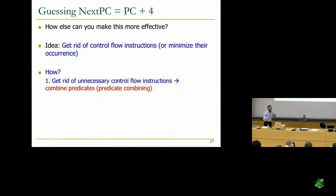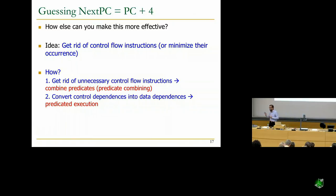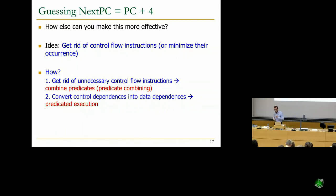The other solution is predicated execution — converting control dependencies into data dependencies. Instead of having a branch, you eliminate it and convert that into a data dependence. Existing processors employ limited forms of this. We'll get to that if we have time.